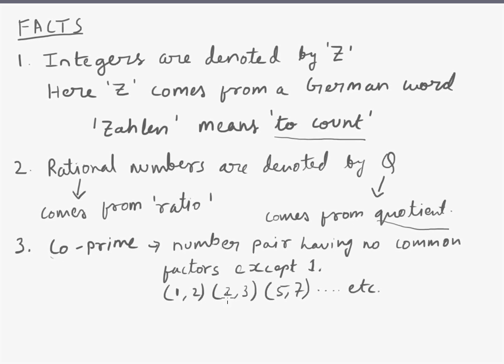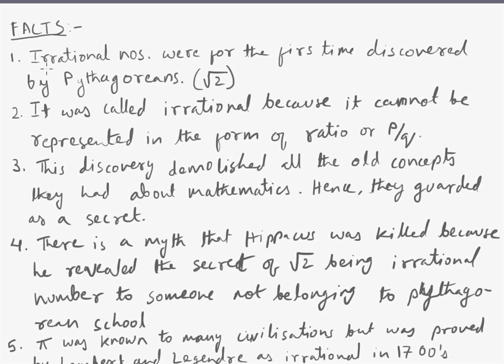Co-prime numbers are number pairs having no common factors except one. Examples: 1, 2, 2, 3, 5, 7, etc.